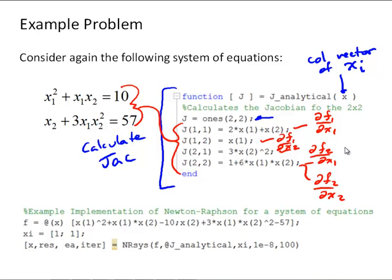We also need a function to calculate the function evaluations, and I did that with an anonymous function. So, here's our function to calculate the f sub i's for each iteration. Our initial guesses, and then our function call to nrsys, which is what I called the m file for implementing Newton-Raphson.